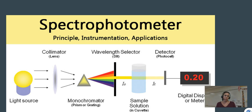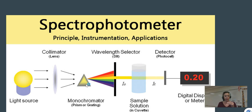Inside the machine, there is a light source whose light is condensed by a lens and then passes through a prism, which separates wavelengths into different colors. In this example, only the yellow wavelength is selected, and it goes through the sample in the cuvette. Whatever light passes through is detected by the spectrophotometer, which then calculates the absorption of that sample.